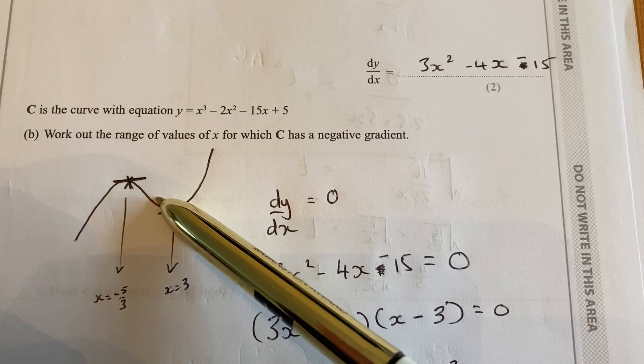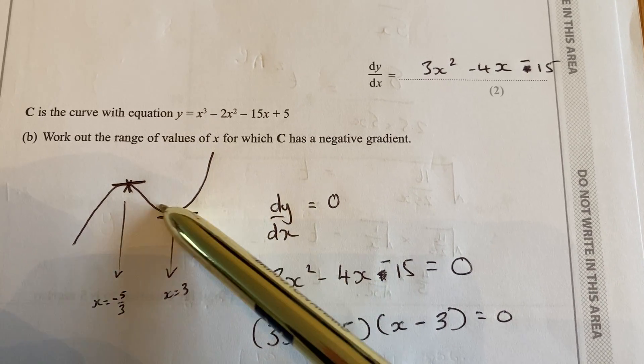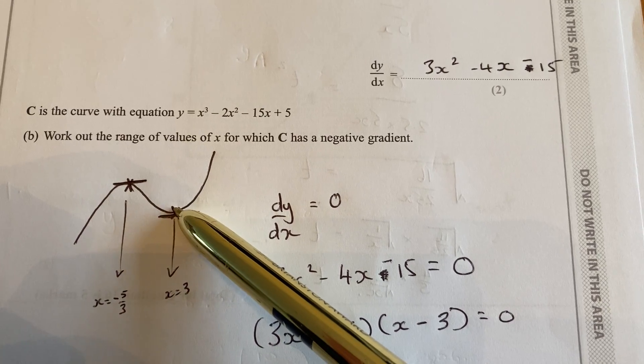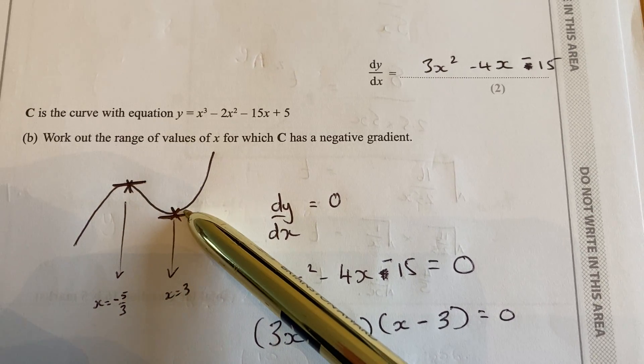OK, so what we're looking for, where it has a negative gradient, this bit here, between the peak and the trough, the top and the bottom, the maximum and the minimum.